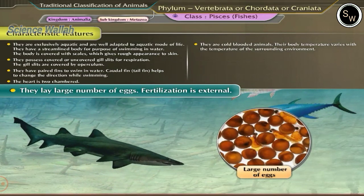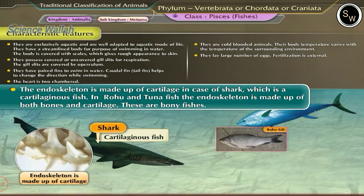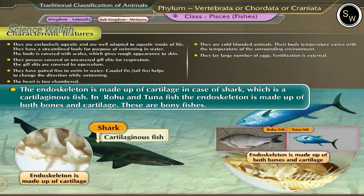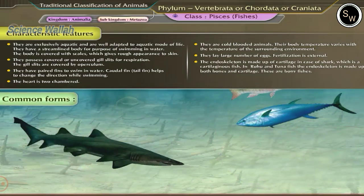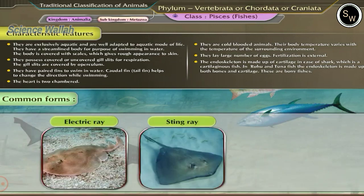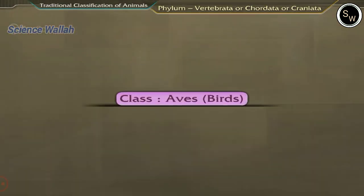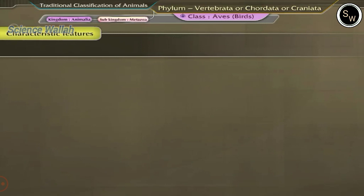They lay a large number of eggs and fertilization is external. The endoskeleton is made up of cartilage in the case of the shark, which is a cartilaginous fish. In rohu and tuna fish, the endoskeleton is made up of both bones and cartilage — these are bony fishes. Common examples of this class are electric ray, stingray, and dogfish.